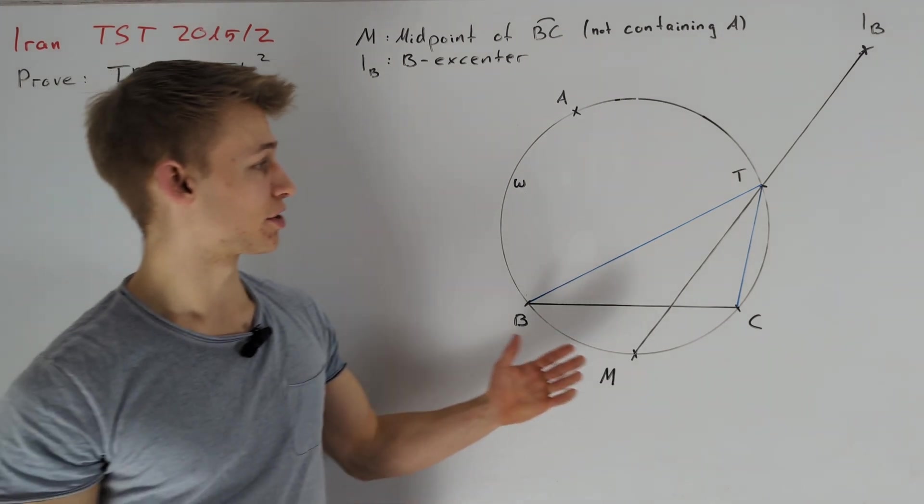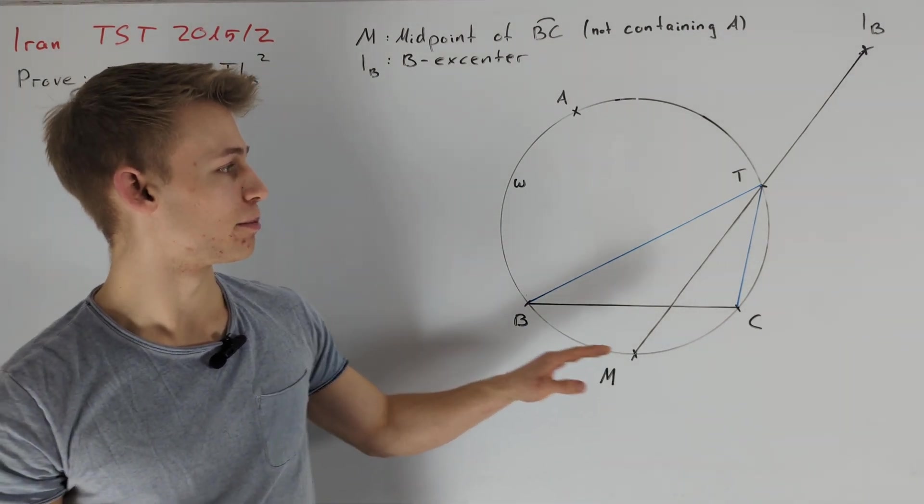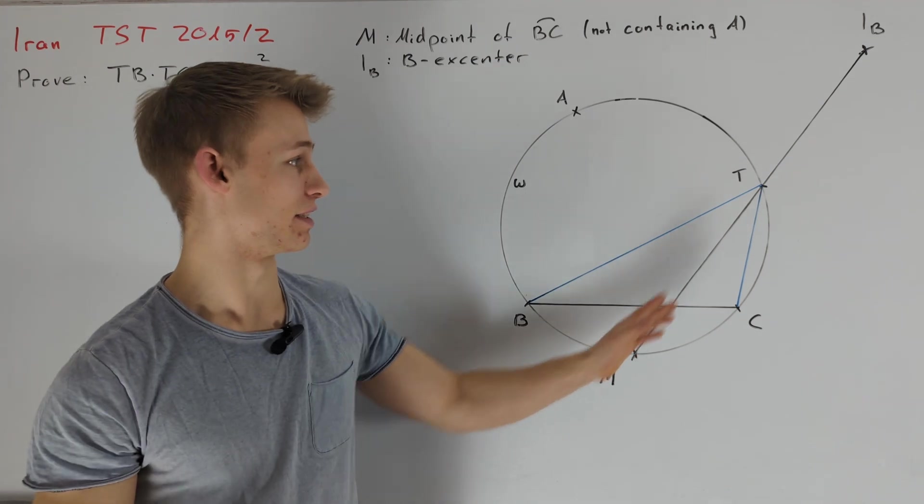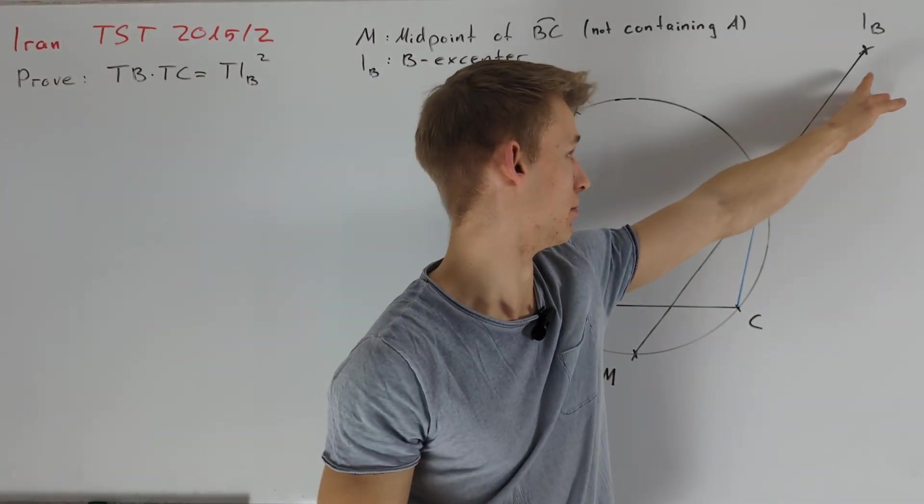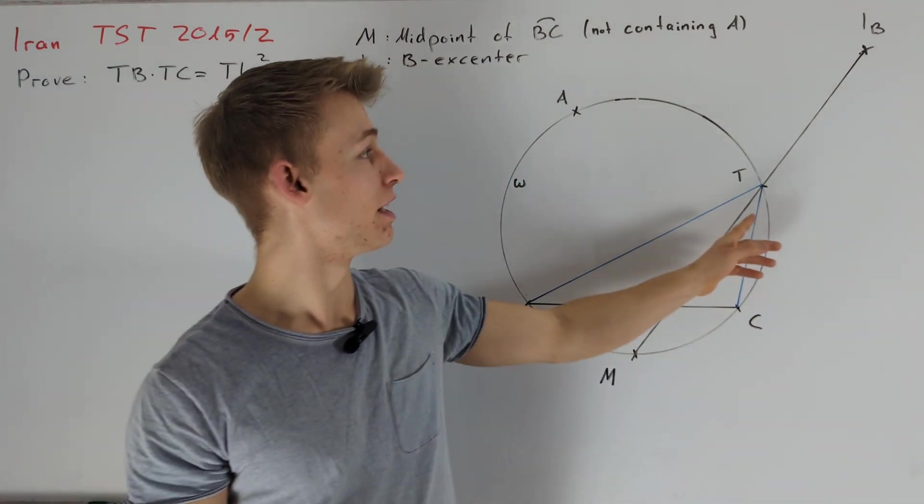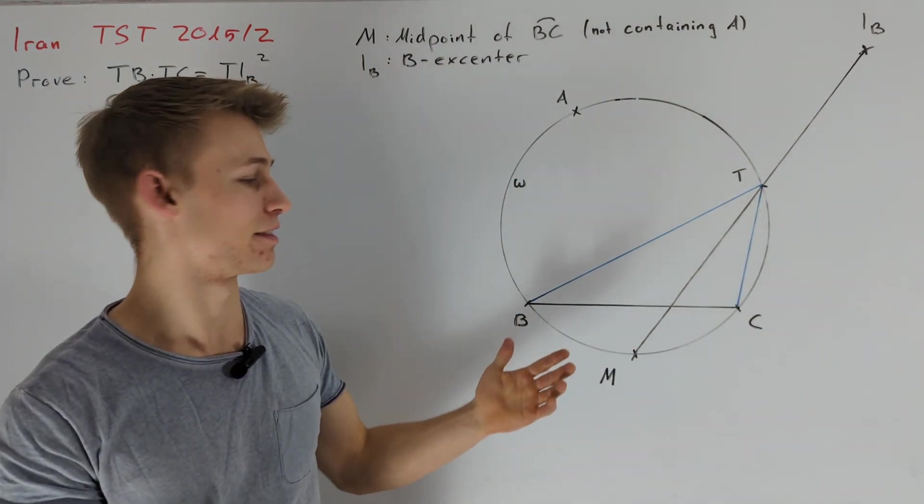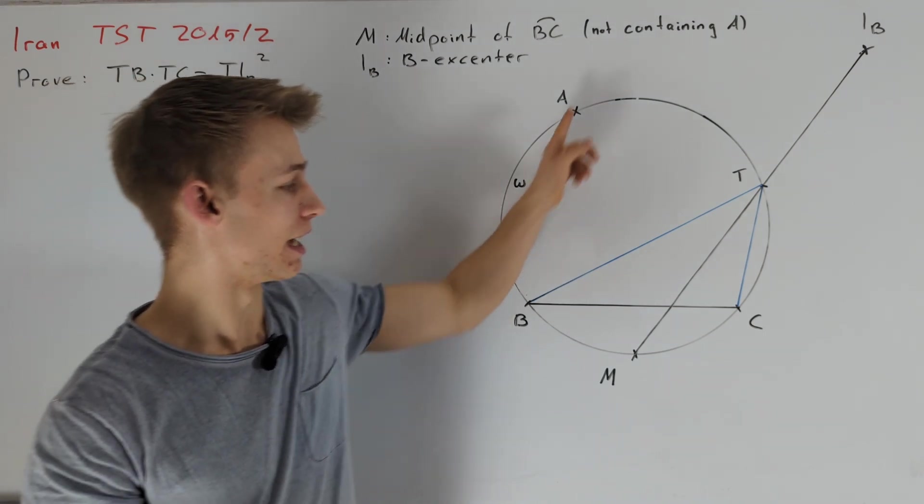When taking a look at the picture, we can see that nearly all important points depend on T or are related to T. The only exception is point A and point IB. Because for IB, we know that it lies on MT, but we also need the fact that, for example, it lies on the external angle bisector of BAC.